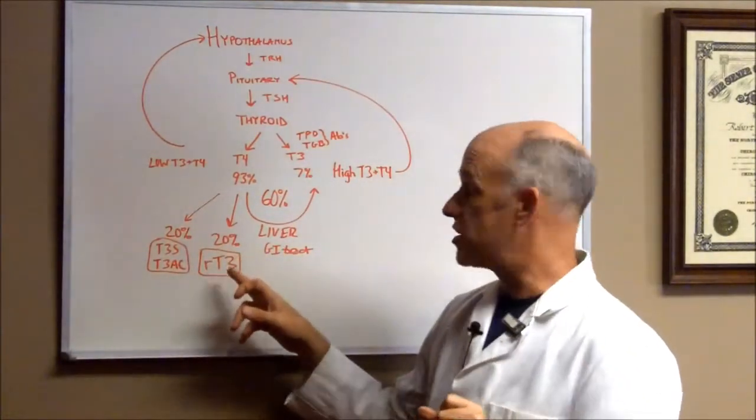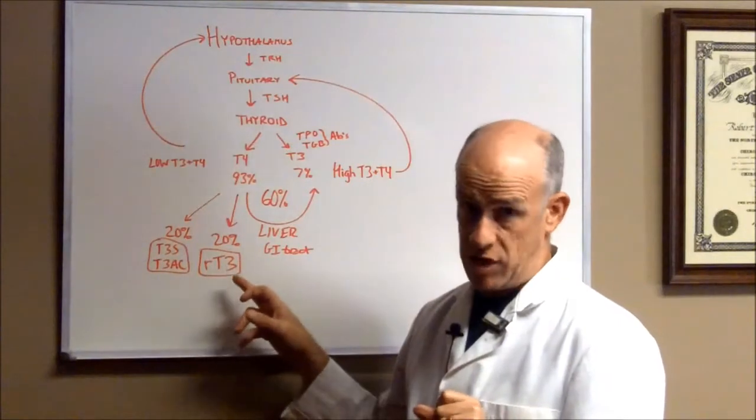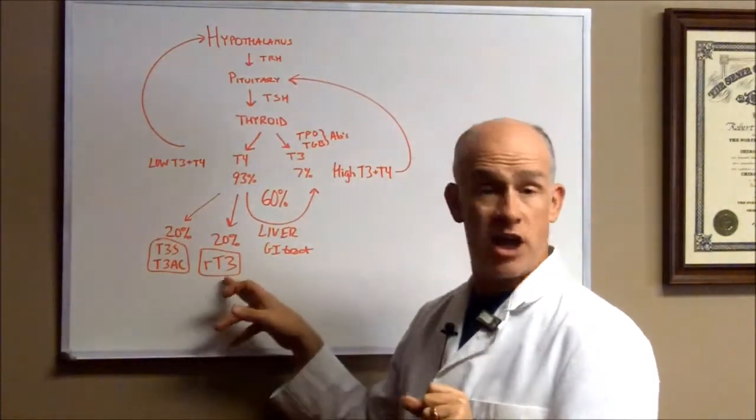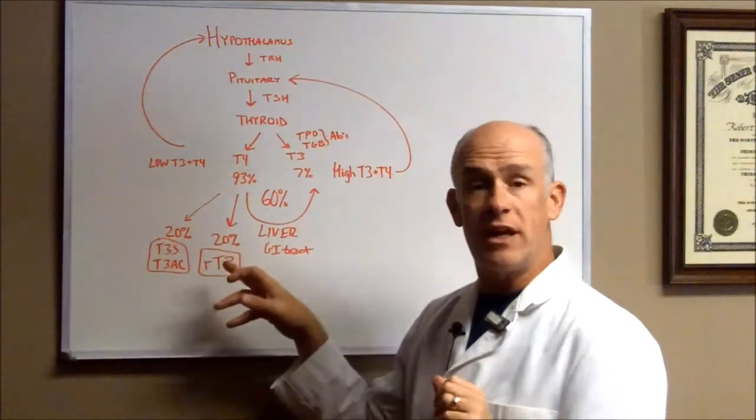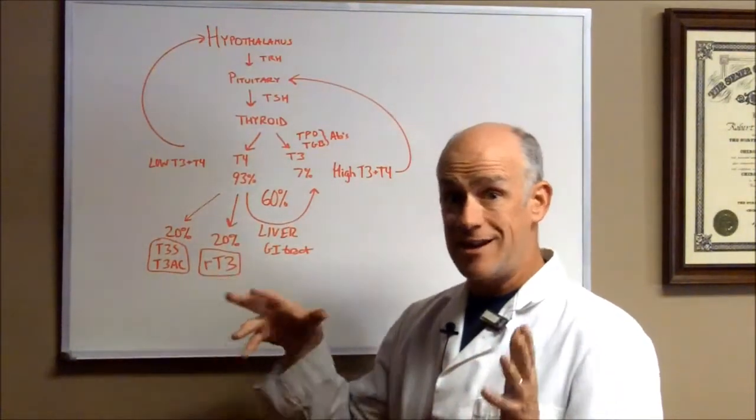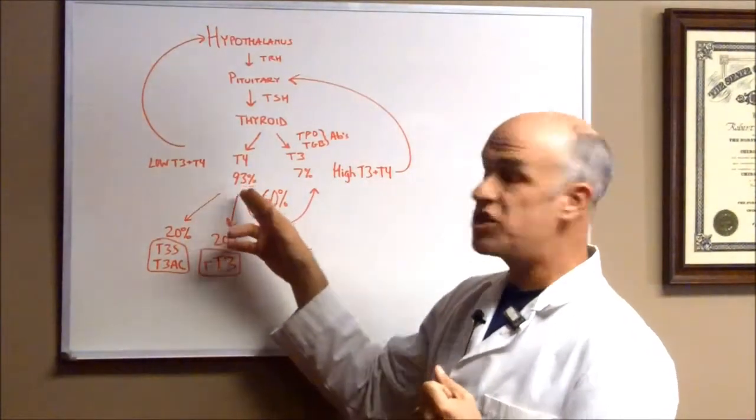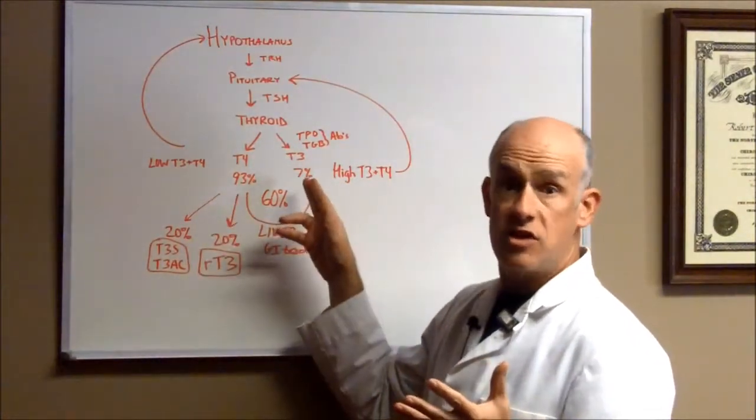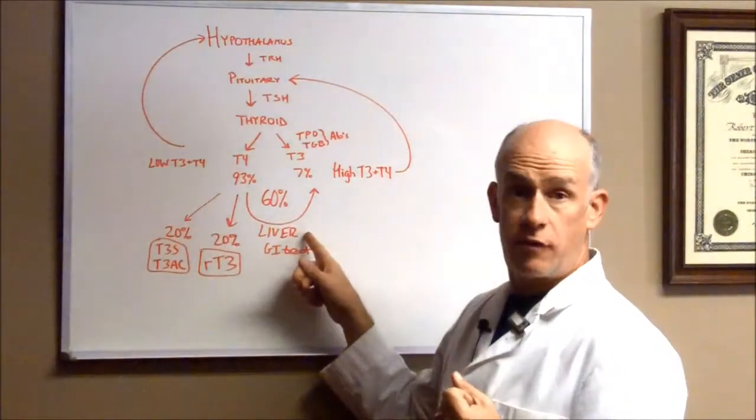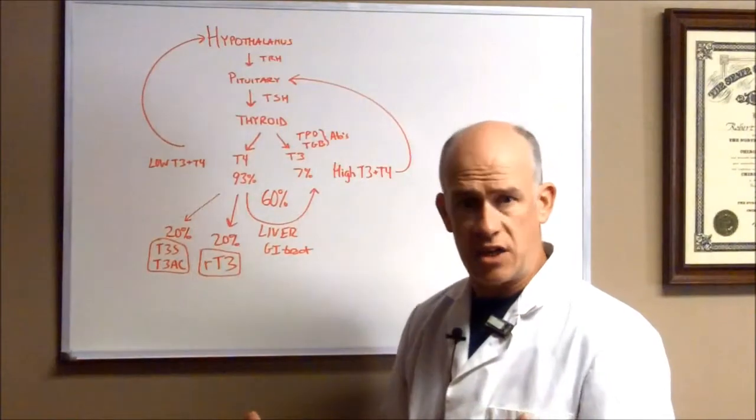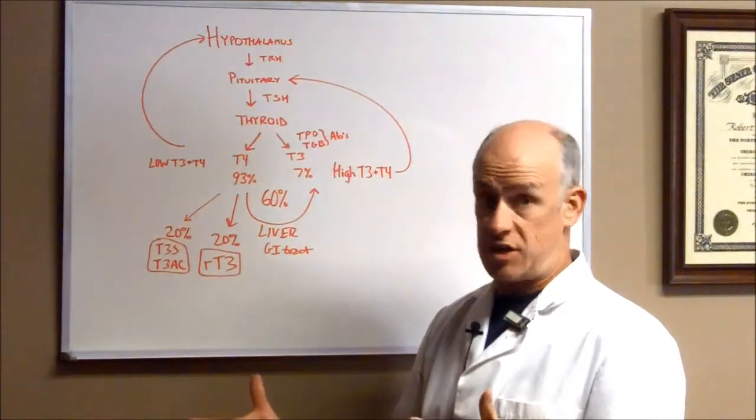Another 20% of that T4 gets converted into reverse T3. Again, an inactive form. And you need to check that. You need to see. If there's too much being converted into reverse T3, that's significant. That's a test that needs to be run. About 60% of your T4 will get converted into T3. This takes place in your liver and in your gastrointestinal tracts and outside in your body tissues. That's where the conversion takes place.